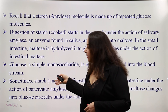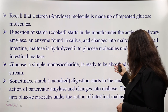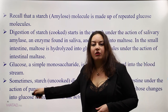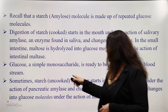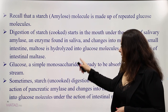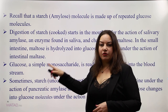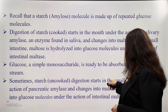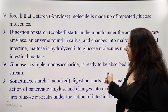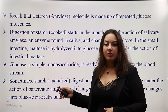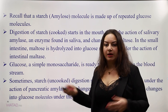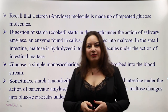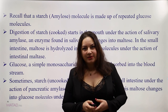Sometimes, if the starch is uncooked, digestion will start in the small intestine under the action of another enzyme called pancreatic amylase. In this case, pancreatic amylase acts on starch to change it into maltose, and then intestinal maltase changes maltose into glucose molecules. Finally, glucose is absorbed by the bloodstream. Hope you have a great day, and thanks for your attention.